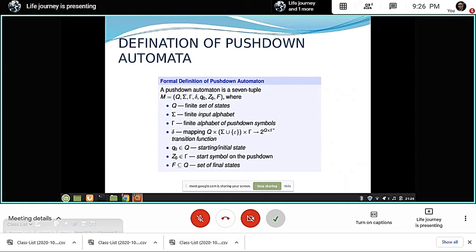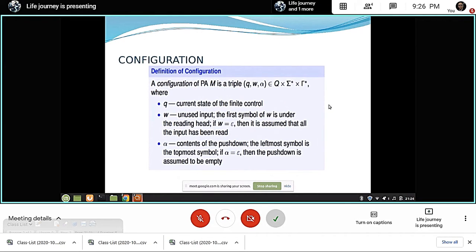Definition of configuration. A configuration of PDA is a triple (Q, W, alpha) where Q equals the current state of the finite control, W equals unused input, and alpha consists of pushdown. The leftmost symbol is the topmost symbol.